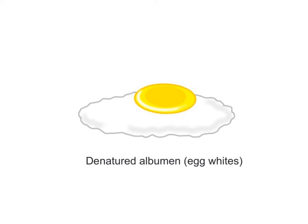This is similar to frying an egg or cooking a steak. Once a protein is denatured or cooked, like the protein albumin in egg whites, it cannot be uncooked.